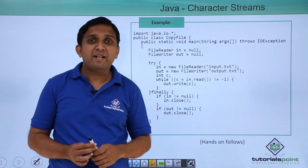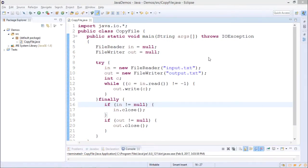We will implement this code practically. This is a test for character stream. Here I am using two objects, one is FileReader, other is FileWriter.